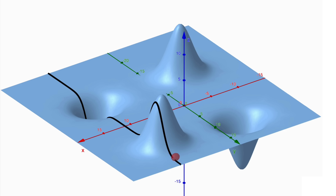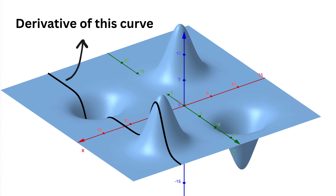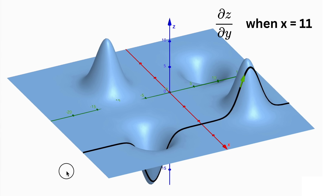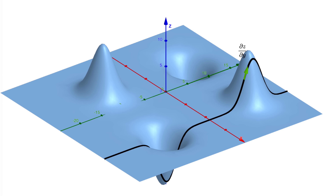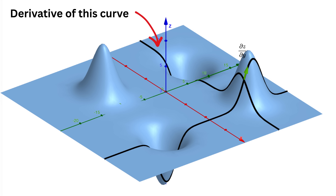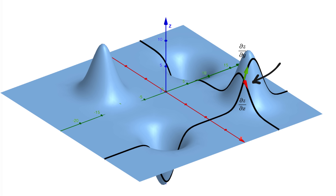Along this curve, when the curve goes up, z is increasing, and when the curve goes down, z is decreasing. This is exactly what a partial derivative of z with respect to y measures — how fast z changes as we move along y, ignoring x for the moment. We can represent this slope using an arrow at some point. Similarly, we can fix y at some value and move along x. The curve we get shows how z changes along x, and the slope of this curve is the partial derivative with respect to x. So partial derivatives are just slopes along one direction at a time — they tell us how steep the surface is if we only move in that direction. We can represent this slope using an arrow at the same point.